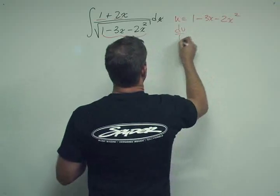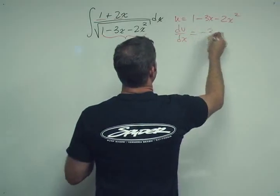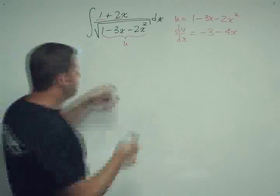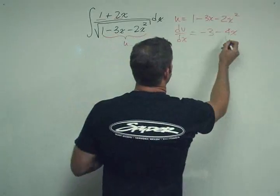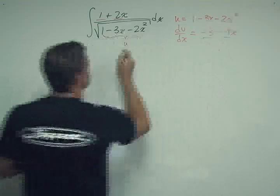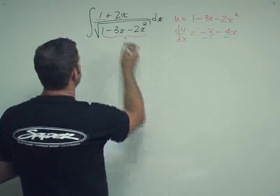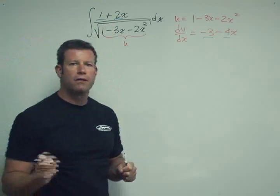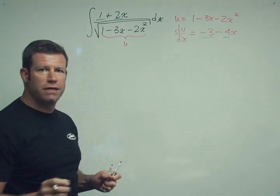Then du/dx is going to be minus 3 minus 4x, which is different than what we have, right? Here we have a ratio of 4 to 3, signs are the same. And here we have a ratio of 2 to 1. So not good, right? But can we force it to be the same ratio? Yes.